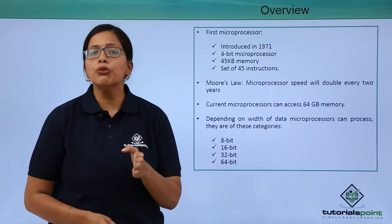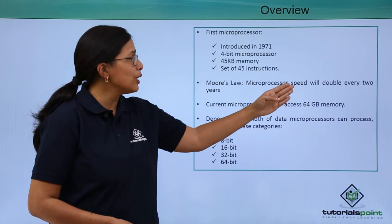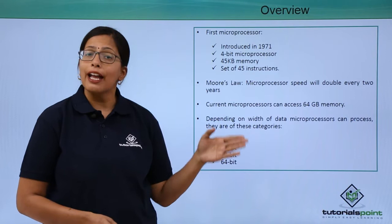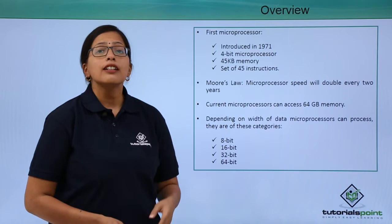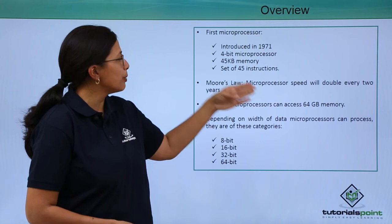He said that microprocessor speed will double every two years. He gave this law way back in 1971 and it still holds true. Current microprocessors can access 64 gigabits of memory at a time. Just imagine — 45 kilobits to 64 gigabits.